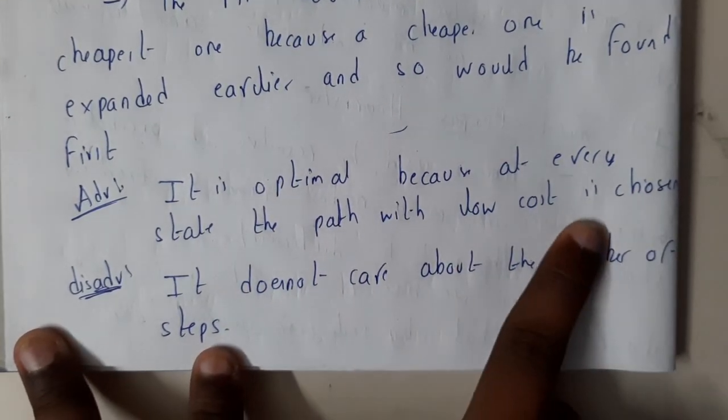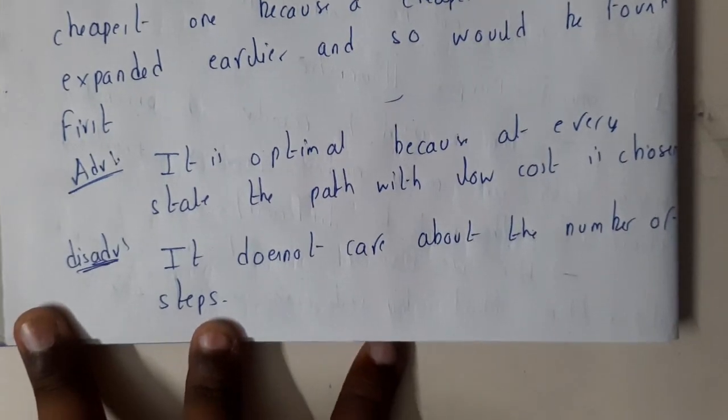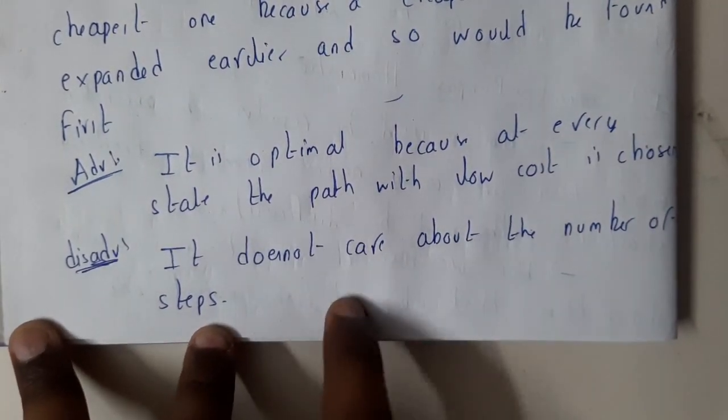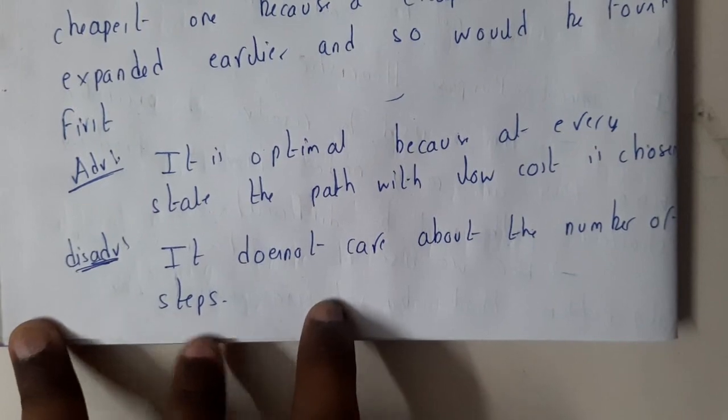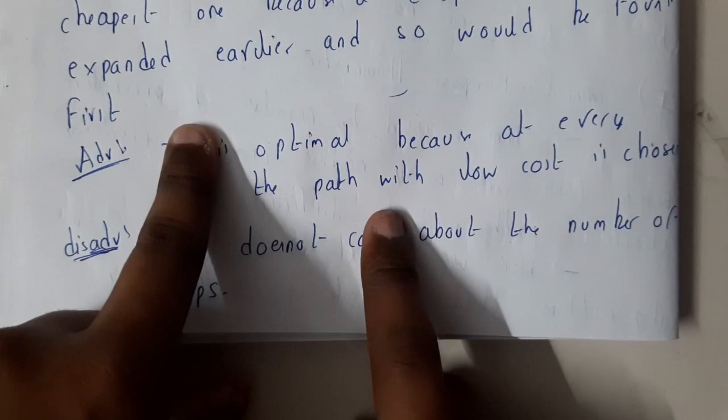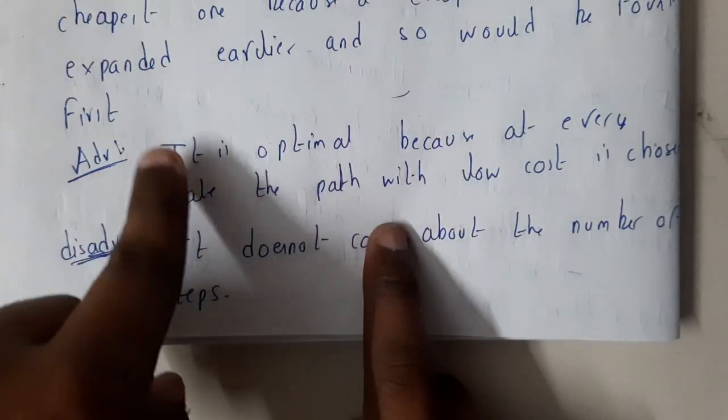It does not care about the number of steps. If it is getting the least cost in one particular path, it goes like that only. Even if the solution is right beside it, it goes in the least cost path only. That's the main drawback of this uniform cost search.